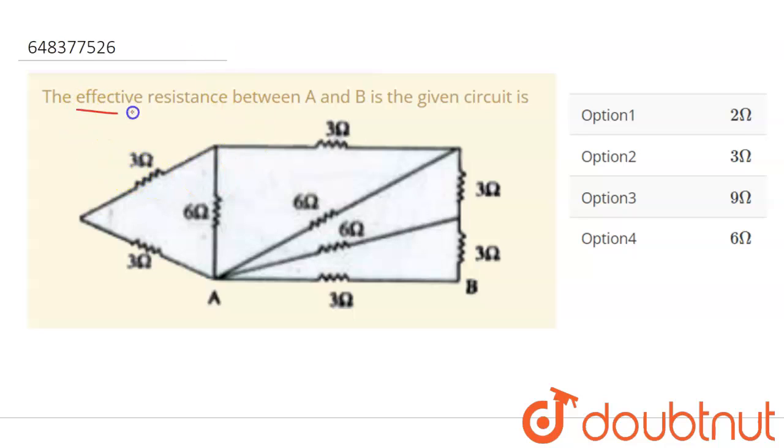Hello students, so question is the effective resistance between A and B in the given circuit is. So we have to get our equivalent between A and B. Okay, so let's solve.